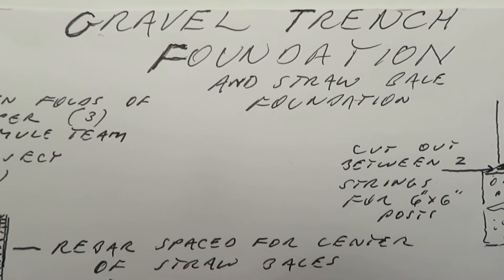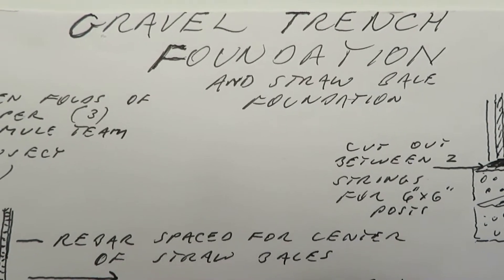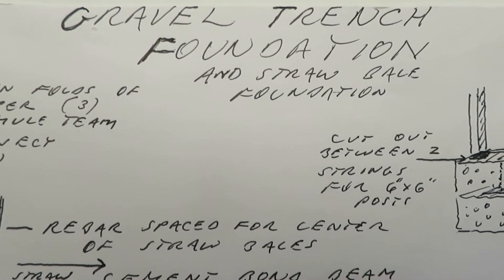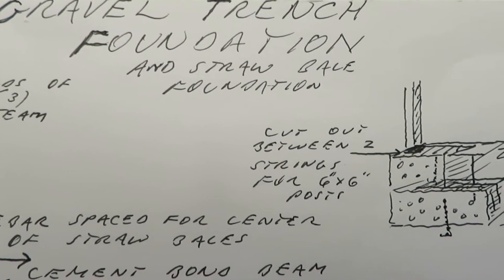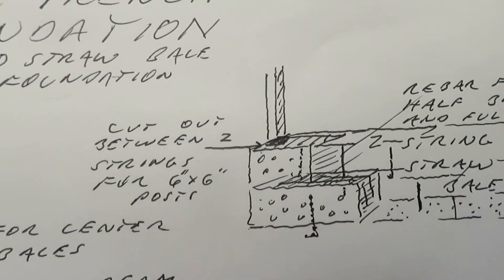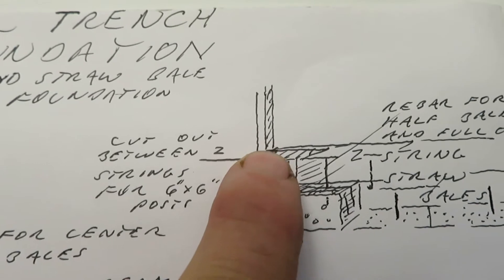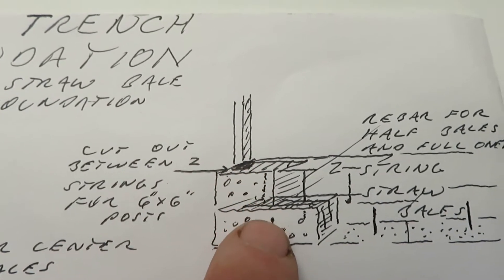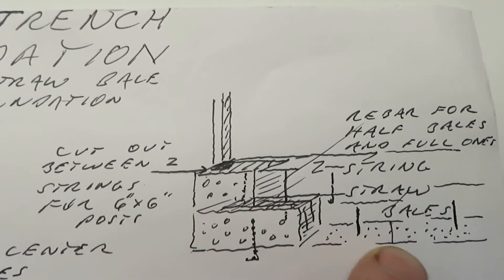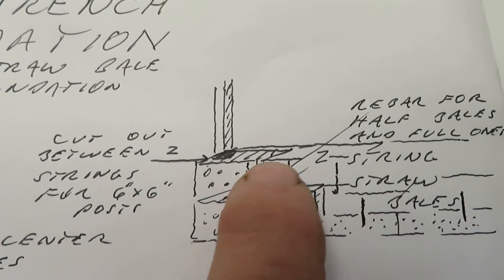This video shows detail in our Vallecitos, New Mexico homestead's straw bale house, where straw bales were cut six inches in for the six by six posts, alternating where we'd have two straw bales underneath one up here and then half straw bales on each end.